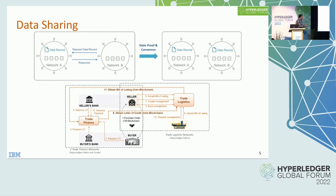Asset exchange simply means you want to swap assets across ledgers in an atomic way. Asset transfer means an asset on one ledger gets moved to a different ledger for some business purpose. For data sharing, here's the model: network one has a data record on the ledger, and network B is running another contract or business workflow which for some reason needs that data record.